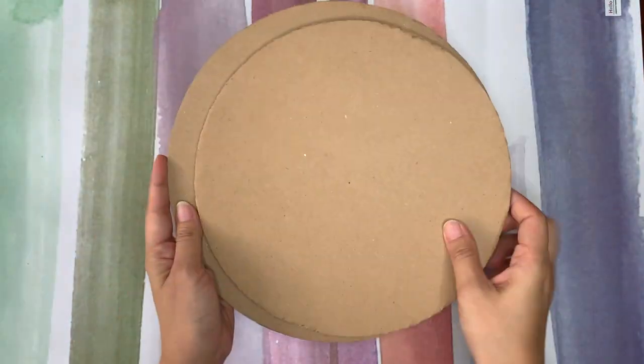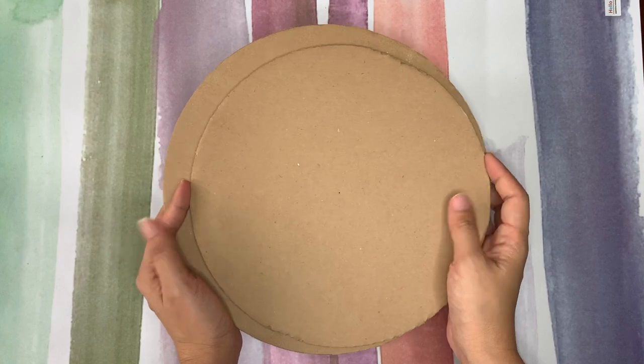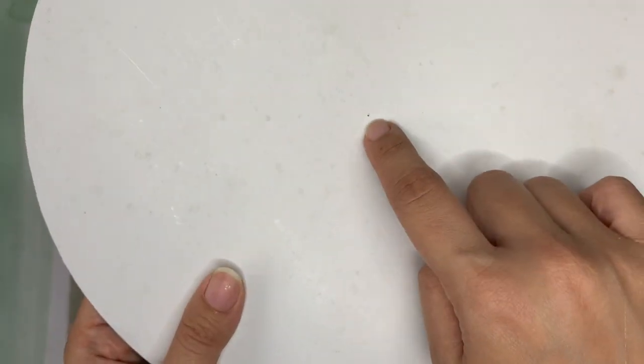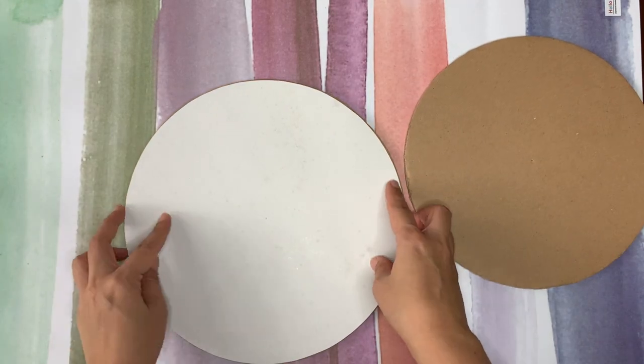Now, how to put the lower part perfectly in the middle, this is how. First, you have to find the center dot of the circle and it will help.